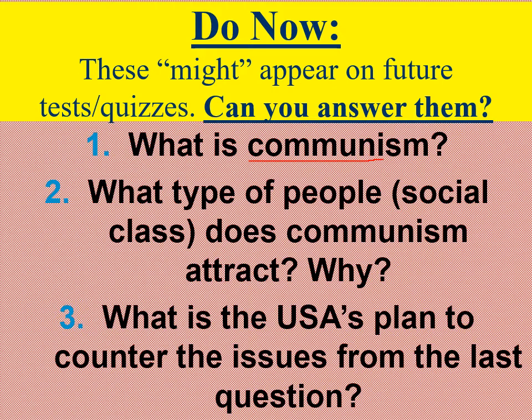Communism attracts people at the lower end of the socioeconomic status — the poorer people. America is going to try to counter this by, number one, trying to contain it where it is. We have political alliances, military alliances, even economic aid. We provide money to countries to help them rebuild so that people are doing well and are not as inclined to adopt communism. So let's get into the real content as we start diving into Asia.